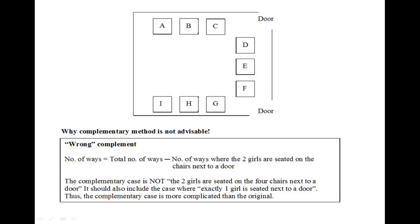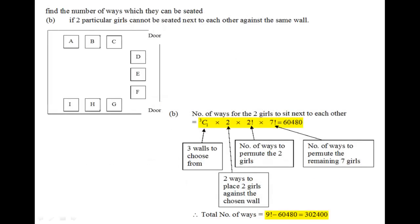Just make sure that whenever you do a complementary method, think through before you use the method. All right, let's look at part b. Find the number of ways which they can be seated if two particular girls cannot be seated next to each other against the same wall.